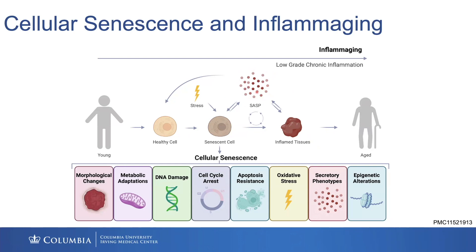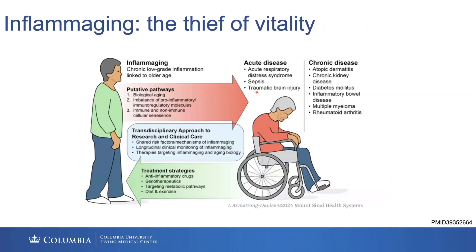That secretory phenotype can contribute to a phenomenon known as inflammaging. As we get older, there's an increase in low-grade chronic sterile inflammation — it's almost like you have a low-grade infection, but you don't. It's quite damaging to your tissues; it's the thief of vitality. It can help drive a number of chronic age-related diseases, cause an over-response to challenges, and in patients with infections, it can cause pre-primed immune cells to release cytokine storms.